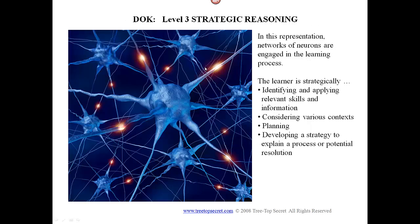At level three, you have a little bit more dynamic activity. In this representation, networks of neurons are engaged in the learning process, and the learner is strategically identifying and applying relevant skills and information. The student is considering various contexts, planning, and developing a strategy to explain a process or potential resolution.